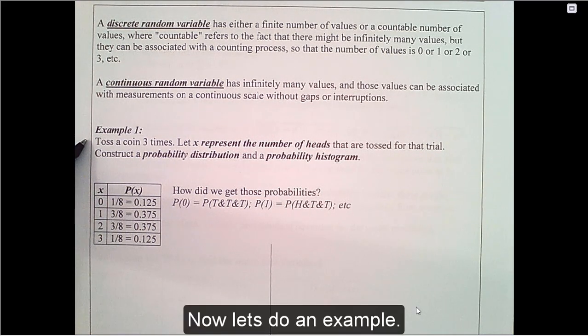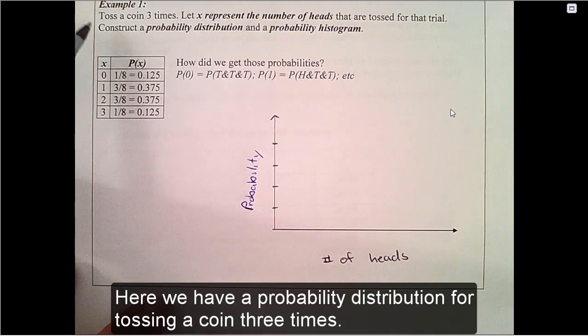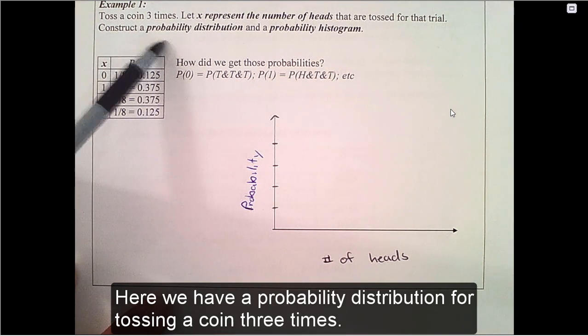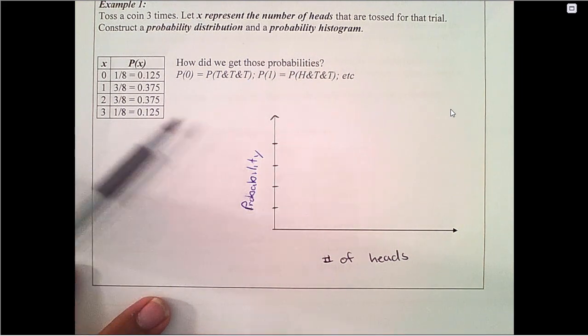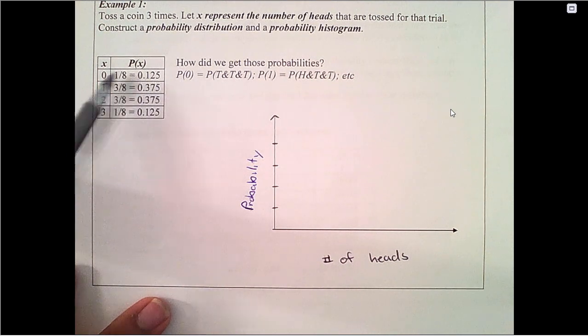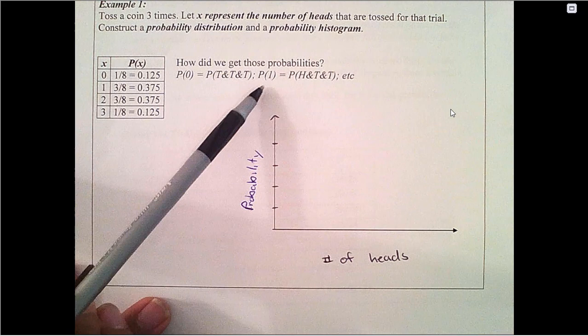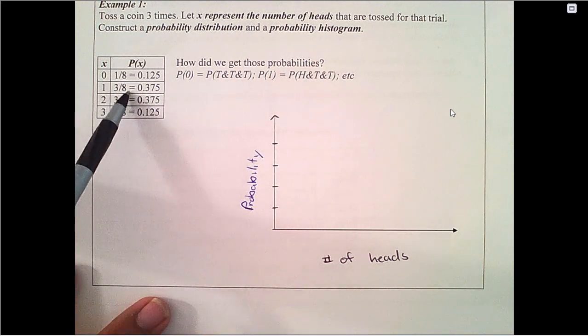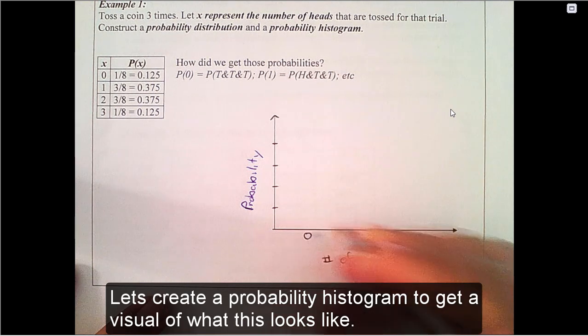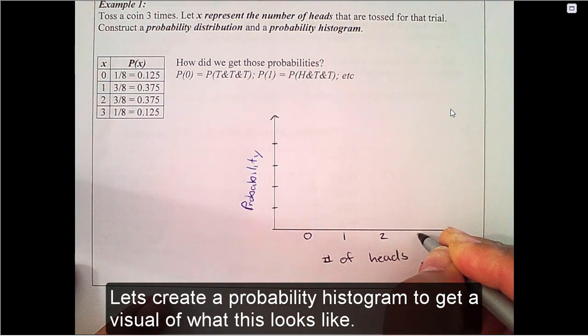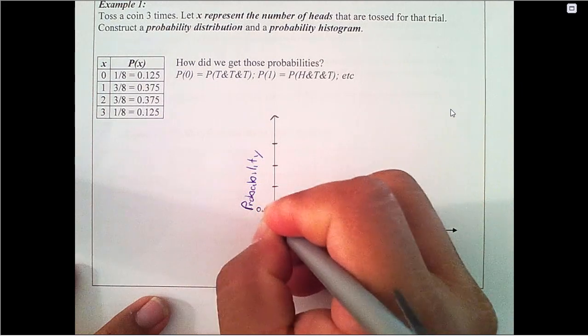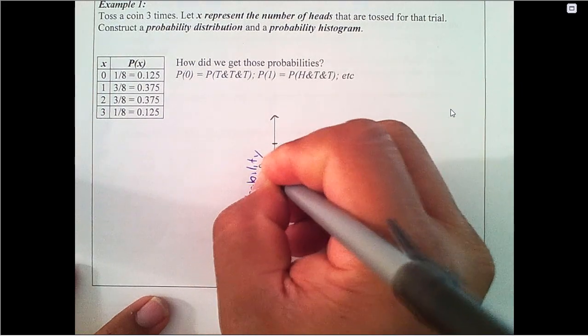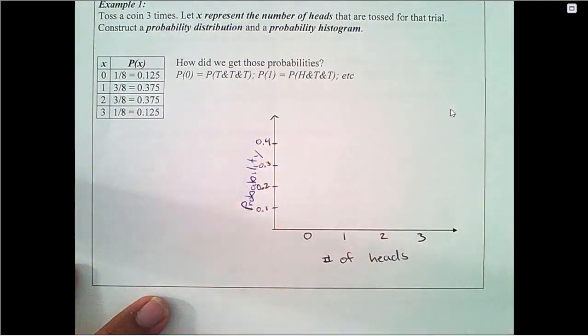Now let's do an example. Here we have a probability distribution for tossing a coin three times. Let's create a probability histogram to get a visual of what this looks like.